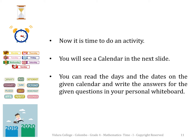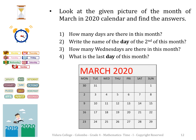Now it's time to do an activity. You will see a calendar in the next slide. You can read the days and the dates on the given calendar and write the answers for the given questions in your personal whiteboard. Look at the given picture of the month of March in the 2020 calendar and find the answers. Question 1: How many days are there in this month? Question 2: Write the name of the day of the 2nd of this month. Question 3: How many Wednesdays are there in this month? Question 4: What is the last day of this month?